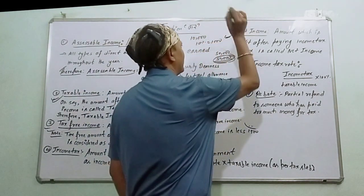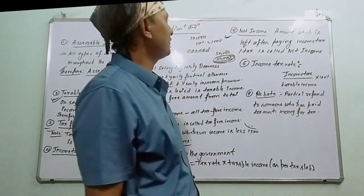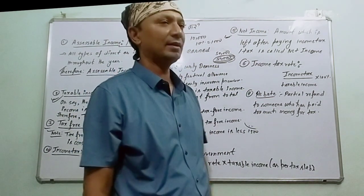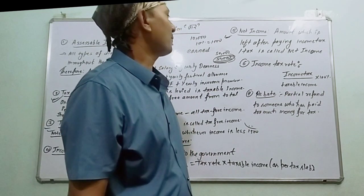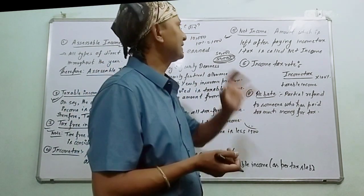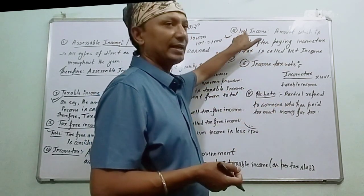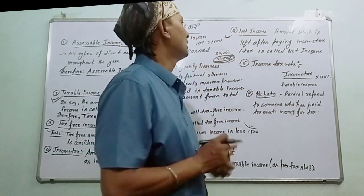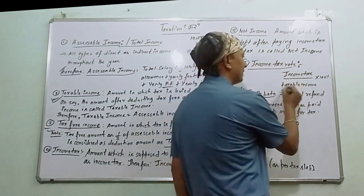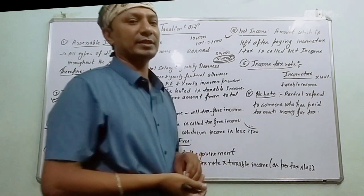Number 5 is Net Income. Net income is the amount left after paying income tax. Net Income equals Accessible Income minus Income Tax. The income tax rate equals income tax divided by taxable income, multiplied by 100%.